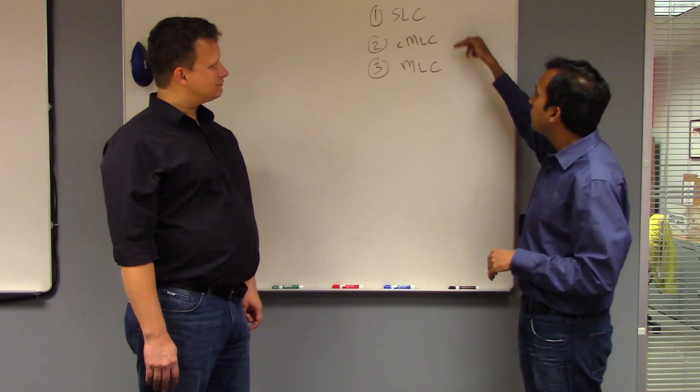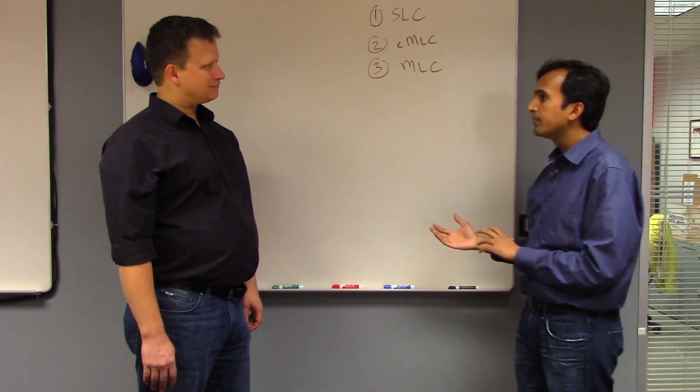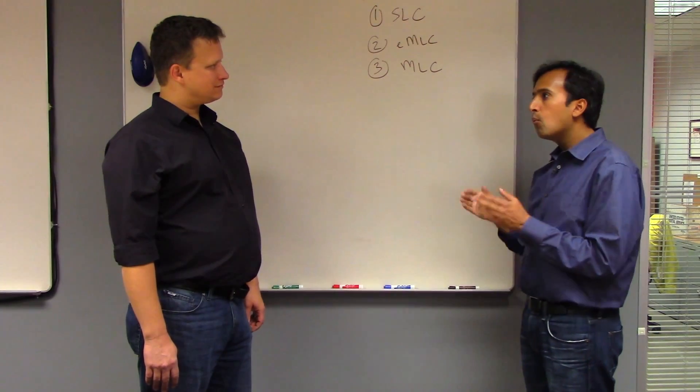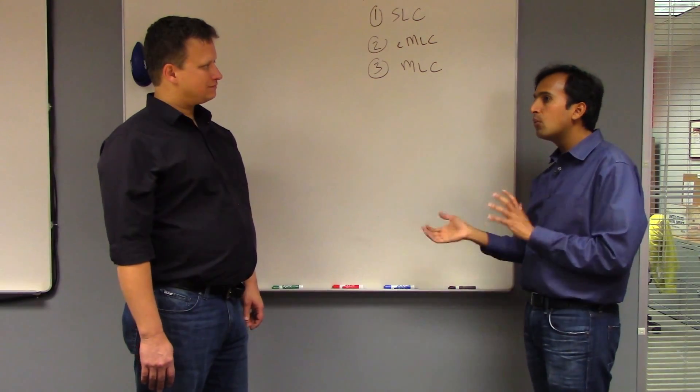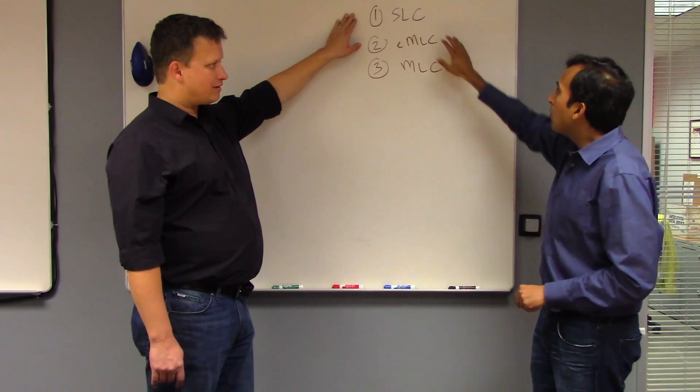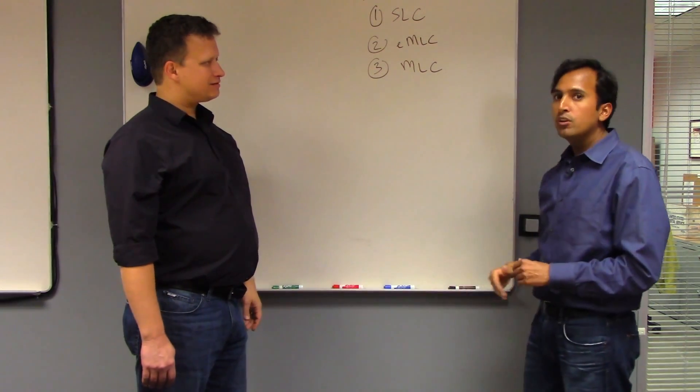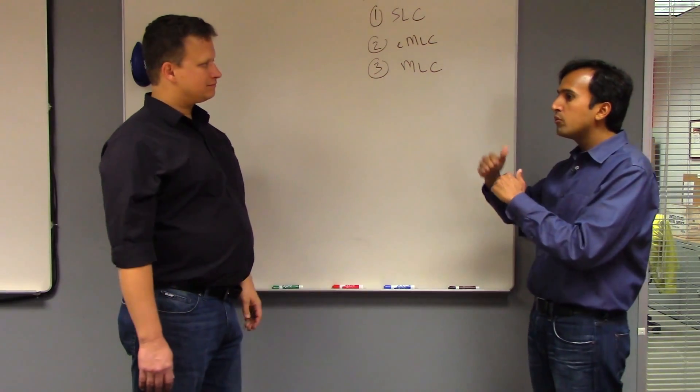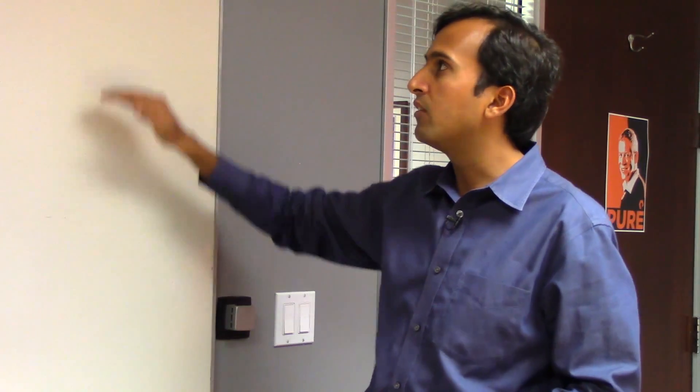And the difference between these three different kinds of Flash is how many program erase cycles you can have. SLC, you're only storing one bit per cell. That's why it's called a single level cell. And because of that, you can actually get away with having a little bit of ambiguity in exactly how far you program it. And that means that it supports the most program erase cycles, so it wears out less quickly. On the other end of the spectrum, there's MLC where you store two bits per cell. And so you've got to be a little bit more precise when you're programming it. And because of that, you can support fewer program erase cycles.